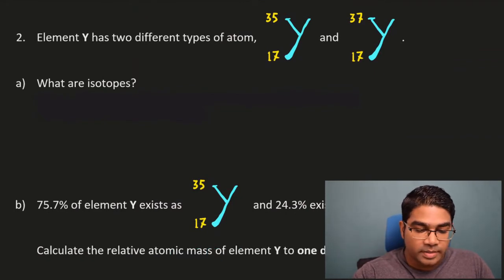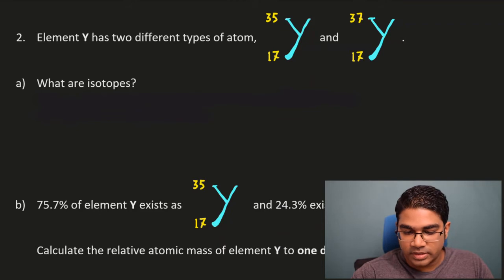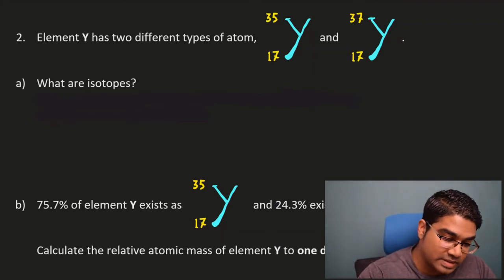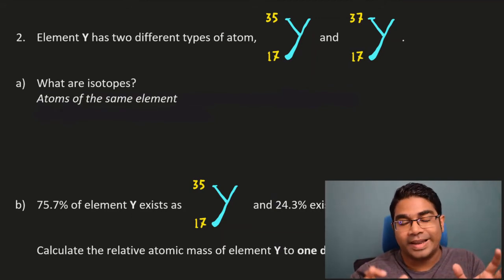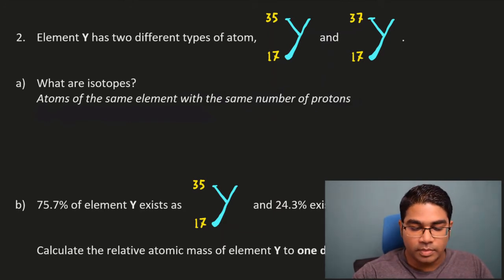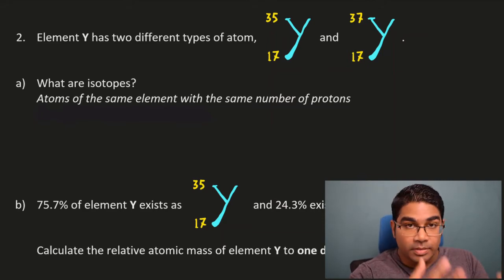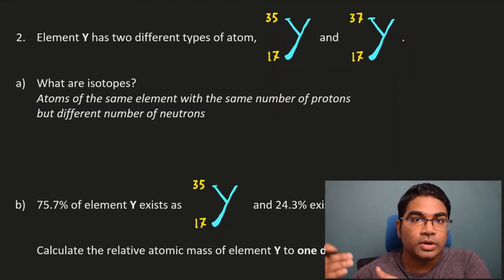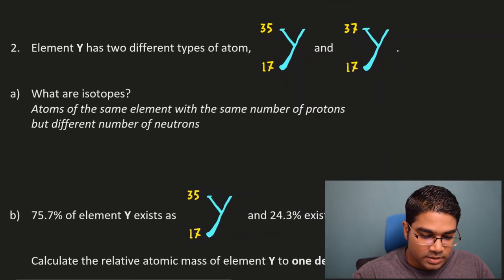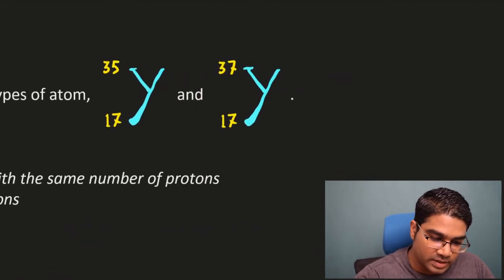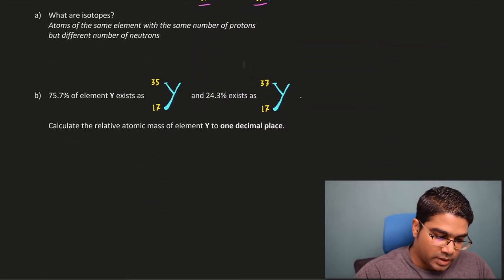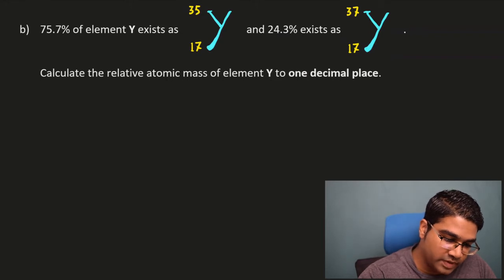Now let's look at element Y, which has two different types of atoms: Y-35 with proton number 17, and Y-37 with proton number 17. What are isotopes? Isotopes are atoms of the same element — they have the same proton number, which determines the element's identity — but they have different numbers of neutrons, giving a different nucleon number. Here, one is 35 and one is 37, but both have proton number 17.